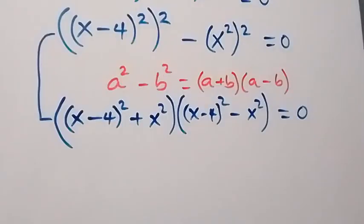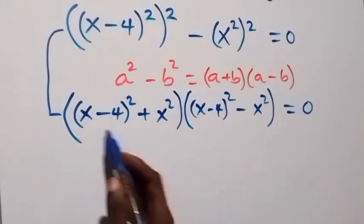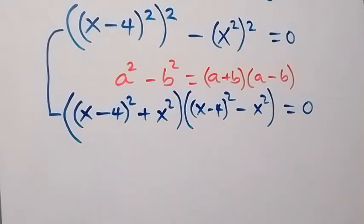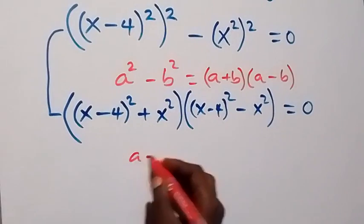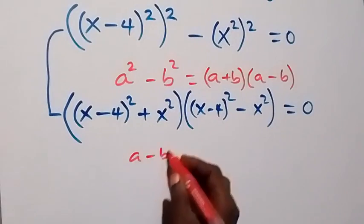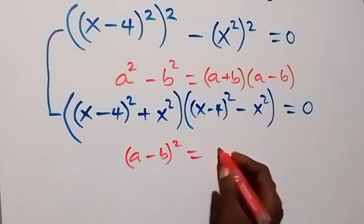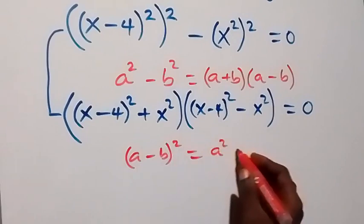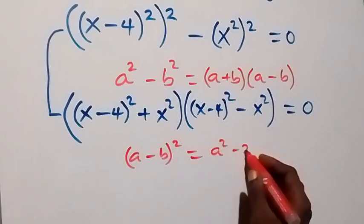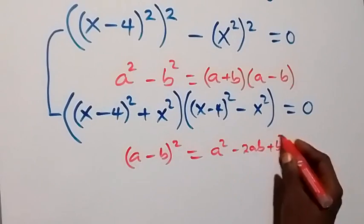That is, we expand this bracket, which is x minus 4. From when we have a minus b squared, this becomes a squared minus 2ab plus b squared.